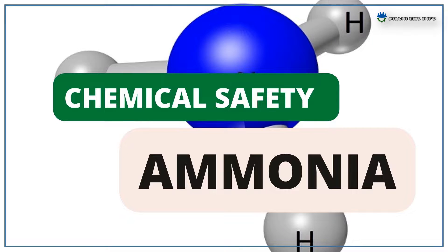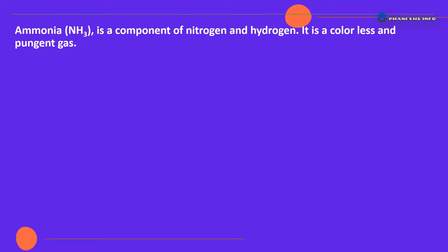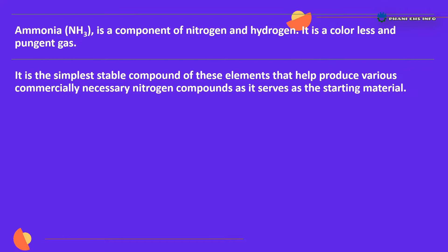Hello everyone, you are watching Funny EHS Info. In this presentation, we are going to know about Ammonia Handling Safety. Ammonia NH3 is a compound of nitrogen and hydrogen. It is a colorless and pungent gas. It is the simplest stable compound of these elements that helps produce various commercially necessary nitrogen compounds, as it serves as the starting material.